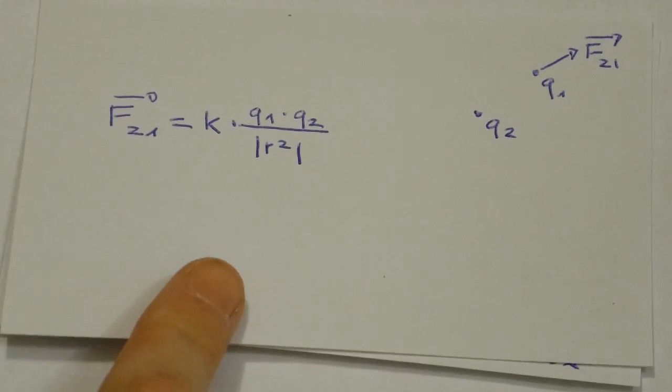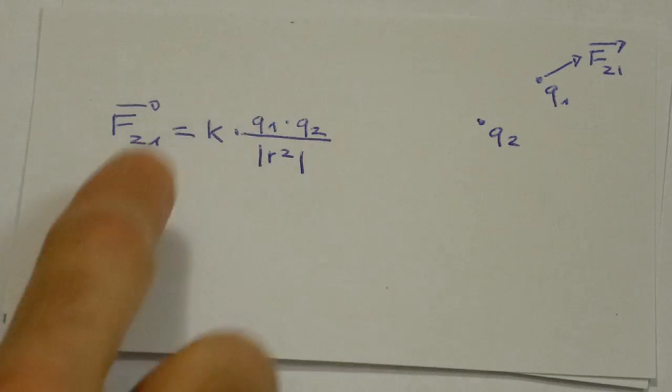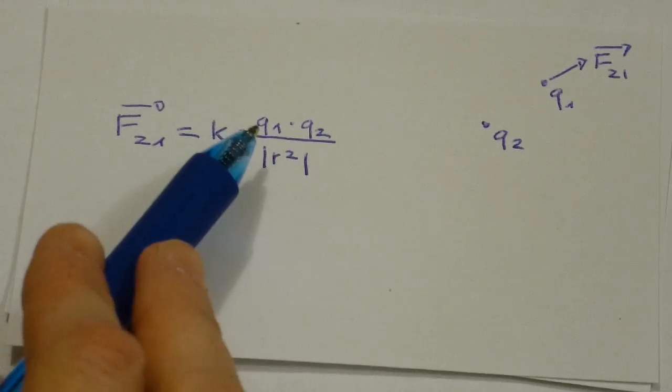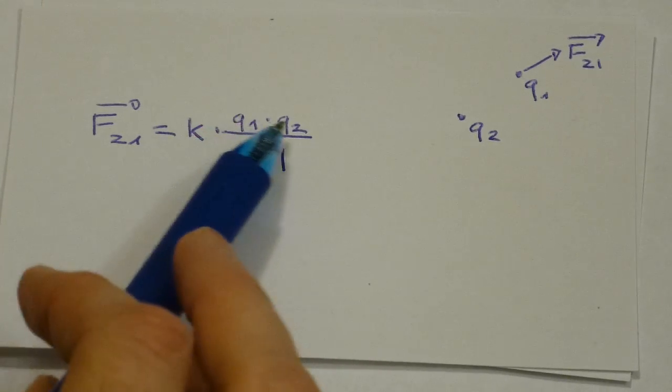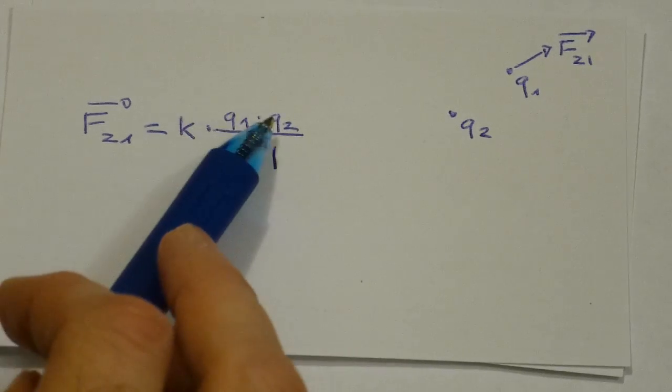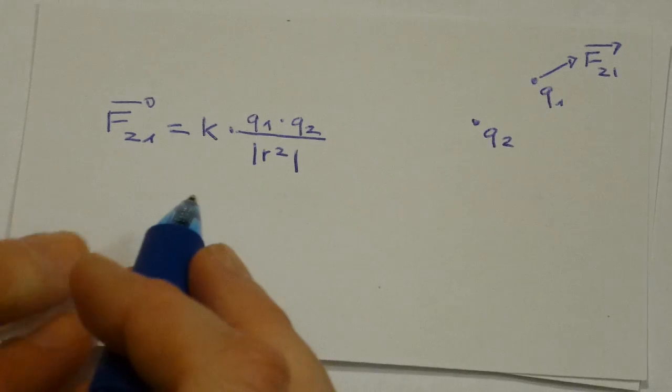What will happen is that whenever we have the same charges, plus plus or negative negative, the whole term becomes plus. And if you have different charges, one of them plus one negative, the whole thing becomes negative. So we get the direction directly out of it.